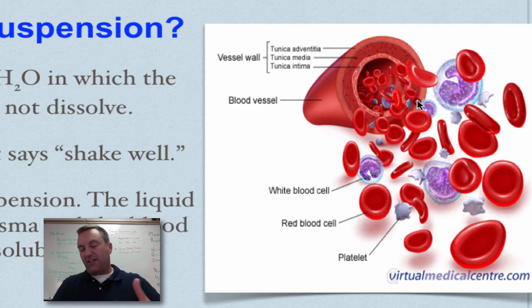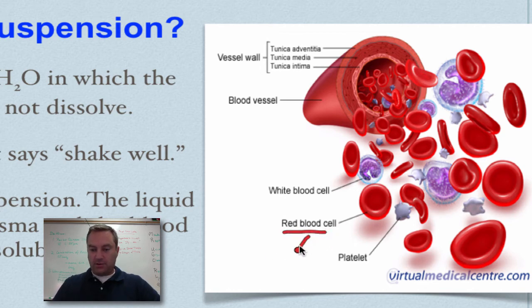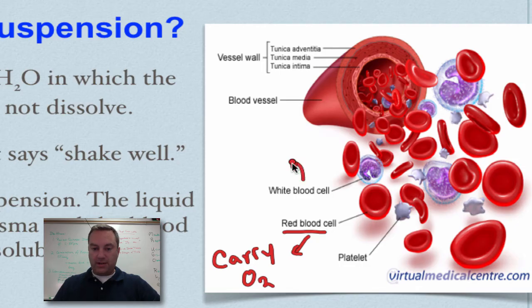So the liquid part inside here is going to be the plasma. But most of the stuff that's floating around, in other words, you'd have to shake well to make it work, that would be red blood cells. Remember, red blood cells are going to carry oxygen, which would be O2. White blood cells, those are used in the immune system.